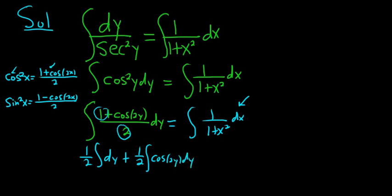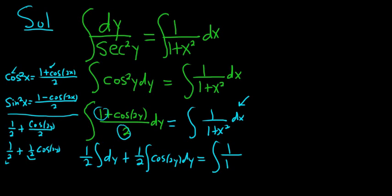And you can write this as plus 1 half integral cosine 2y dy. So I skipped some steps there. Basically, it's 1 over 2 plus cosine of 2y over 2. Then you can write this as 1 half plus 1 half cosine of 2y. And then we just pulled out the 1 halves from the integrals. You can pull out constants from integrals. And over here, we have the integral of 1 over 1 plus x squared.